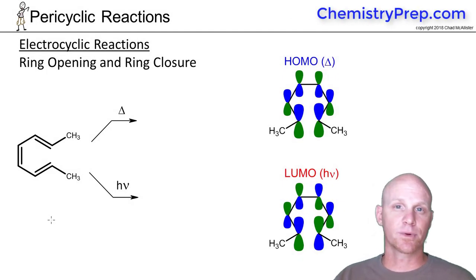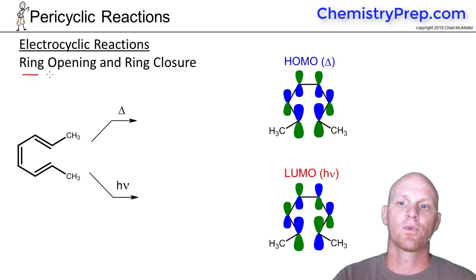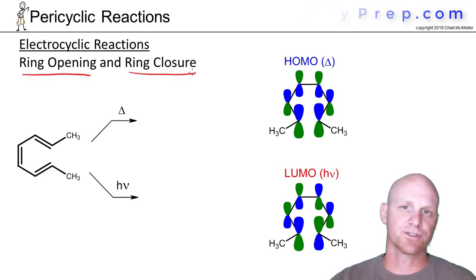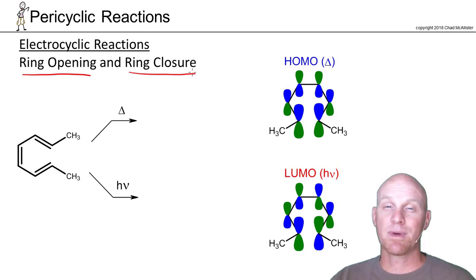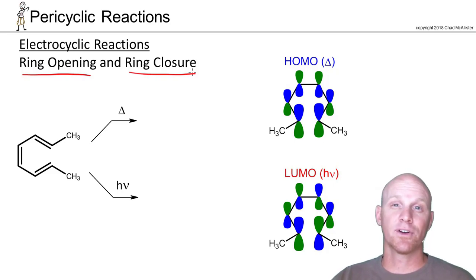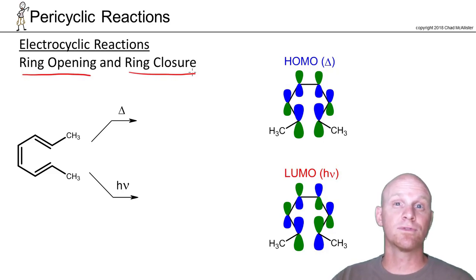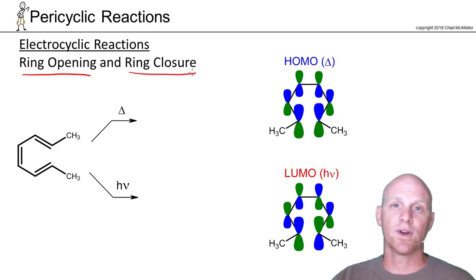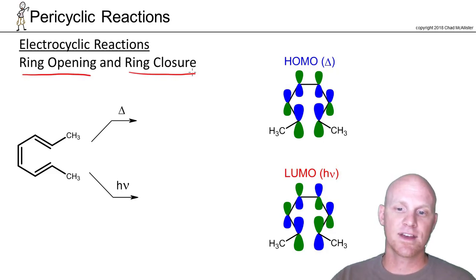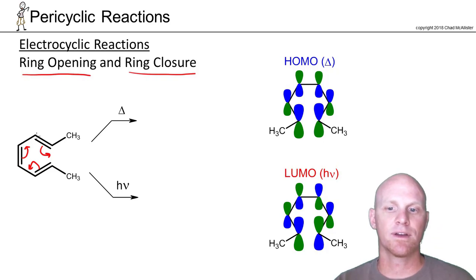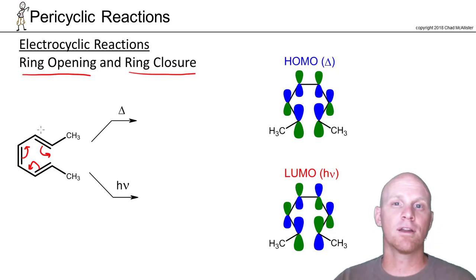We're going to take a look at electrocyclic reactions — these are your ring openings or ring closures. They're totally reversible. You should be able to distinguish these from the Diels-Alder and the rest of the cycloaddition reactions. Your cycloaddition reactions involve two pi systems, usually in the form of two different molecules, whereas your electrocyclics always involve a single conjugated system. We're going to have the cyclic movement of pi electrons, and every single atom is going to both be gaining a bond and losing a bond, so nobody ends up violating the octet rule.